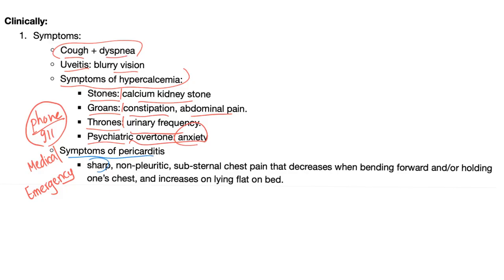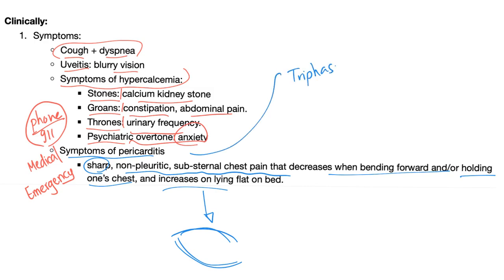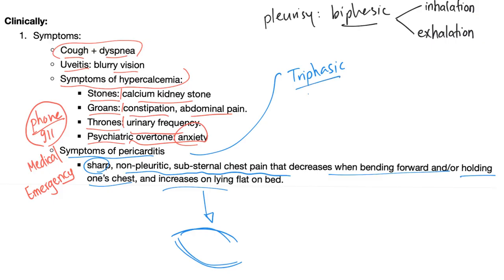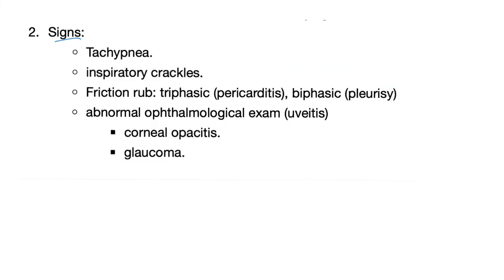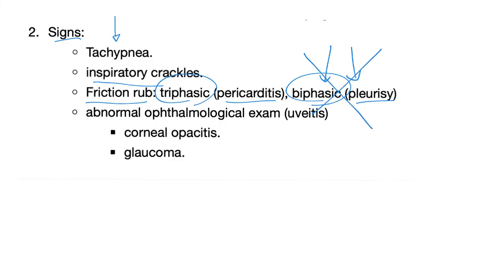Symptoms of pericarditis include sharp, non-pleuritic, sub-sternal chest pain that decreases when bending forward or holding the chest tightly, but increases when lying down — because lying down stretches the pericardium. Pericarditis has a triphasic friction rub: systole, early diastole, and late diastole. This is different from pleuritis, which has only a biphasic friction rub (inhalation and exhalation). If you hold your breath, the biphasic rub disappears, but the triphasic rub persists because the heart is still pumping.